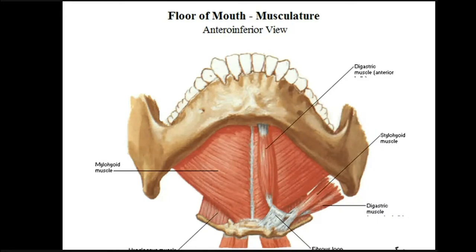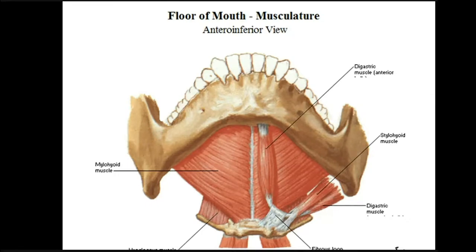The digastric muscle, formed of two bellies, lies inferior to the floor of the oral cavity — it has nothing to do with the floor. The mylohyoid muscle on each side originates from the mylohyoid line, with fibers directed downward, backward, and medially, attaching to each other at the median raphe. The posterior fibers attach to the upper border of the body of the hyoid bone. It has a posterior free border. The mylohyoid muscle is supplied by the nerve to mylohyoid, which is a branch of the inferior alveolar nerve.